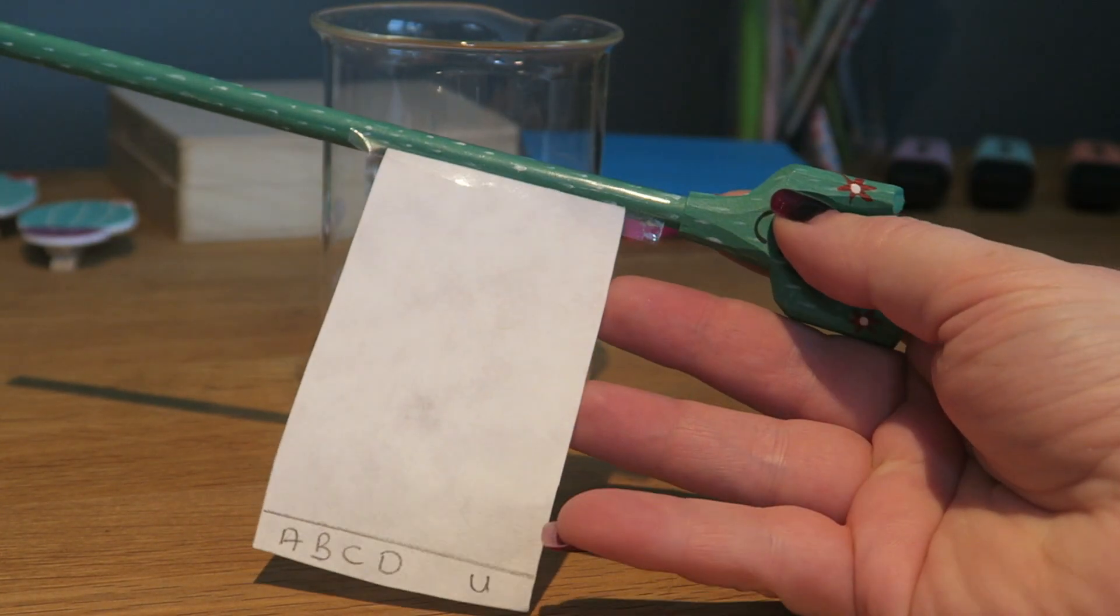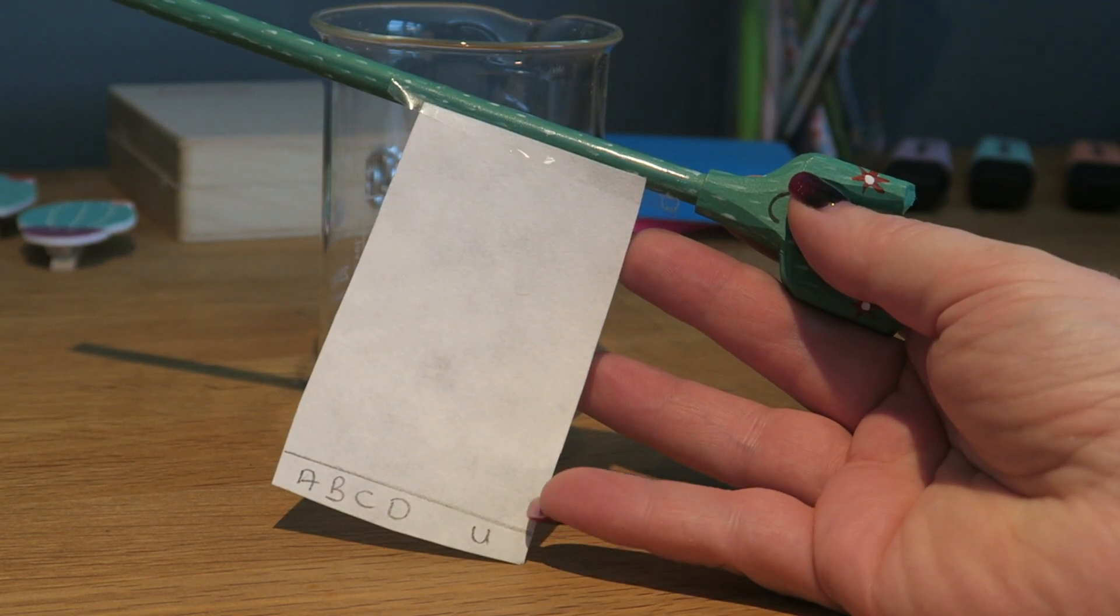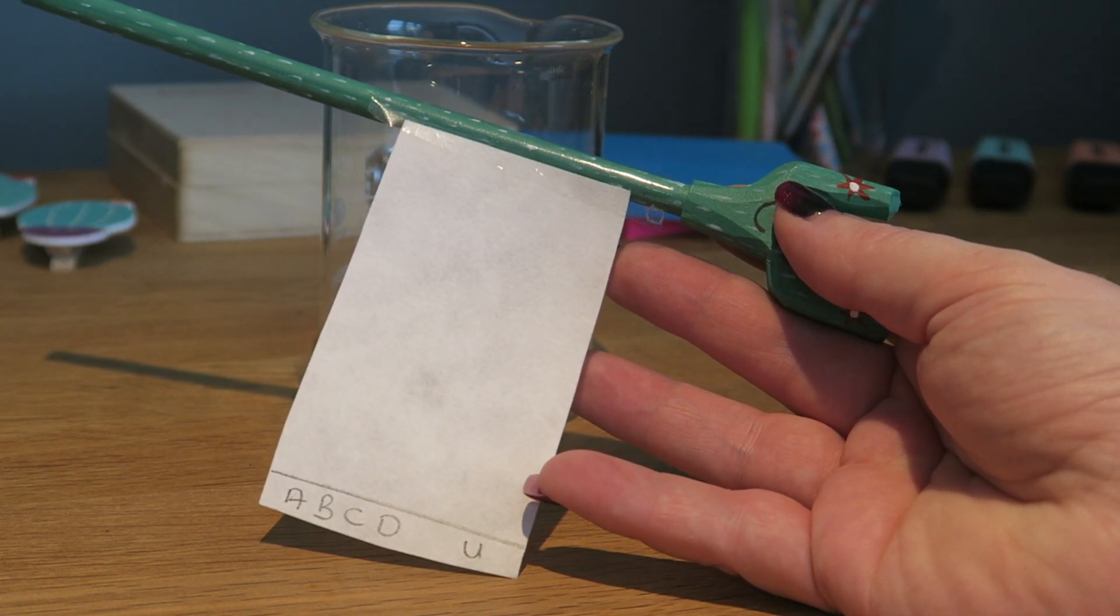For this practical you need a bit of filter paper with a start line or origin line that has been drawn in pencil. If you draw it in pen then the pen will run and it will ruin the experiment.